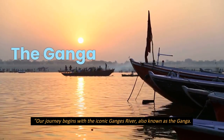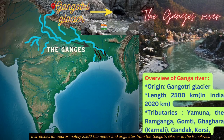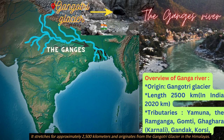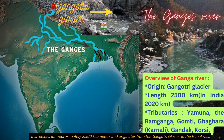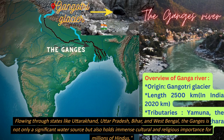Our journey begins with the iconic Ganges river, also known as the Ganga. The Ganga stretches for approximately 2,500 kilometers and originates from the Gangotri Glacier in the Himalayas, as reflected by the arrow line in the diagram. The famous tributaries are Yamuna, Ramganga, Gomti, Ghagra, Gandak, and Koshi. The Ganga flows through states like Uttarakhand, Uttar Pradesh, Bihar, and West Bengal.